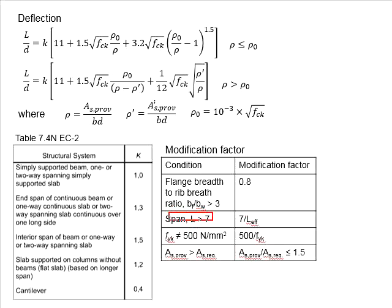In terms of the span of the beam, if the span is more than 7 meter, you may use the modification factors of 7 divided by its effective span length. The longer the span, the smaller the modification factor. This again will lead to a modification factors of less than 1.0 and further reduce the L per D limiting.